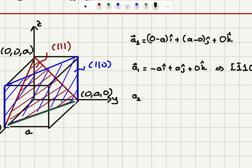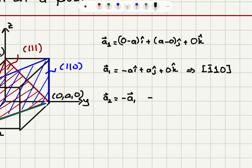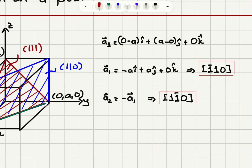For the second vector a2, it points in the opposite direction of a1, so it's in the minus a1 direction. The corresponding Miller indices will be [11̄0]. So we have two possible answers: [1̄10] and [11̄0] for the directions that coincide with the line of intersection of these planes.